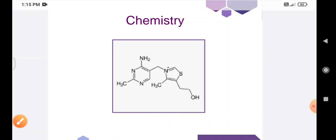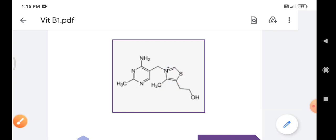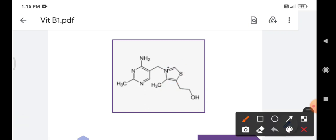The structure of thiamine contains two heterocyclic rings. The first ring is a pyrimidine ring which is a six-membered ring, and the second is a thiazol ring which is a five-membered ring. Both of these heterocyclic rings are joined together by a methylene bridge.